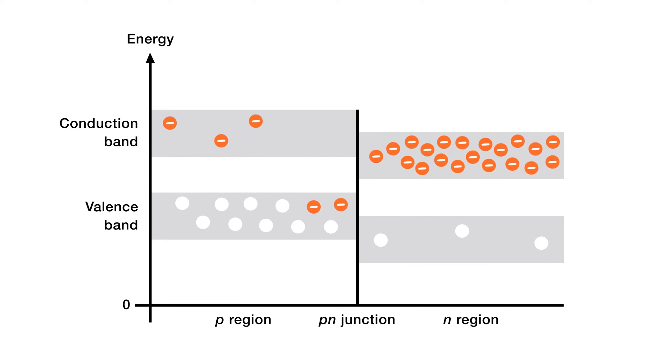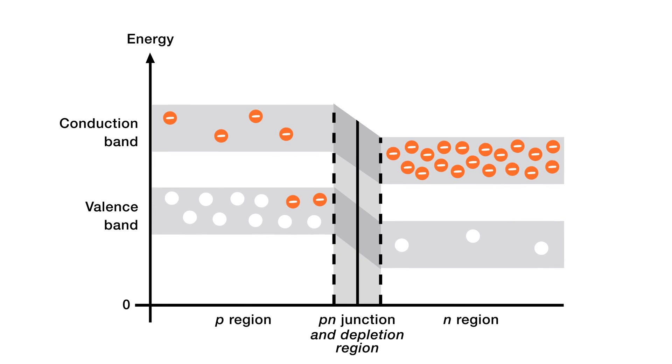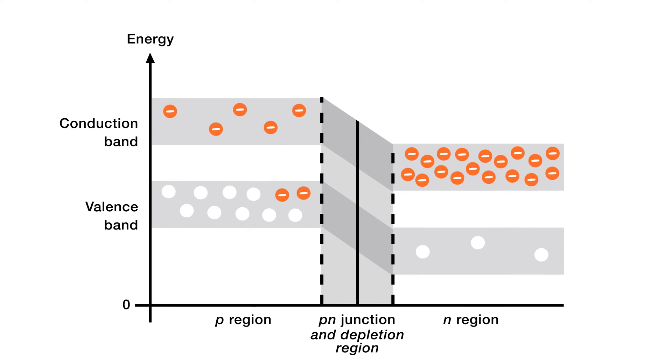As the free electrons from the upper part of the n-region conduction band cross the junction, the depletion region starts to form and expand, but the energy level of the n-region conduction band also starts to decrease. This process will continue until there will be no electrons left in the n-region conduction band with enough energy to cross the junction.